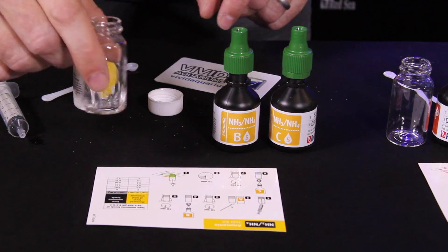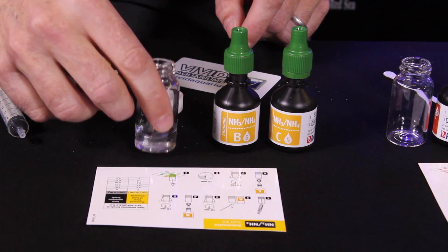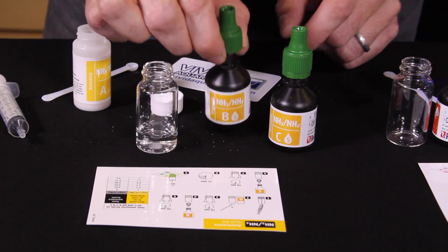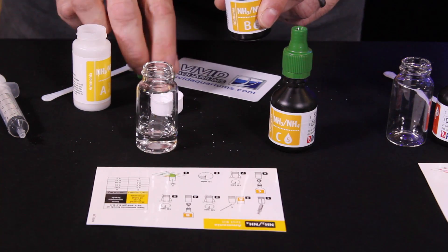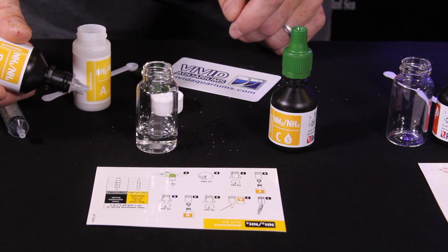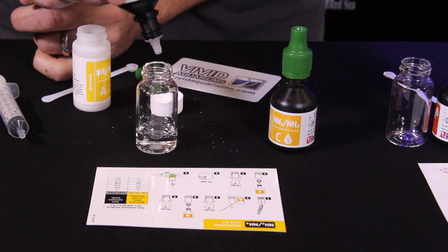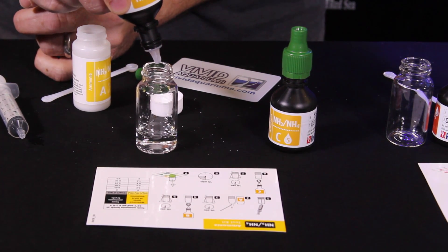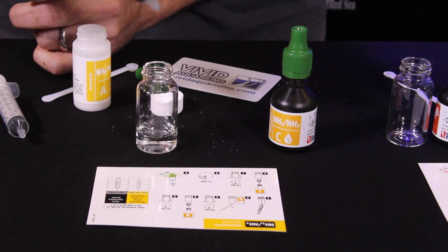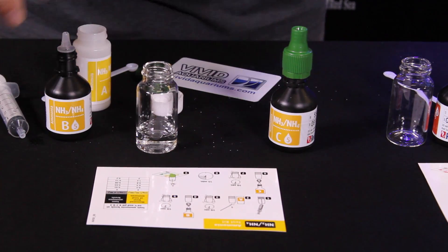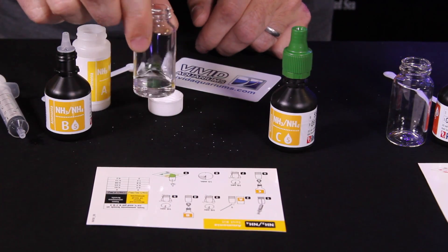And then next step is going to be to add five drops of reagent B. Now anytime you're adding drops of a reagent, I recommend turning the reagent bottle upside down next to the test vial and then moving it over so you get five even drops. One, two, three, four, five.